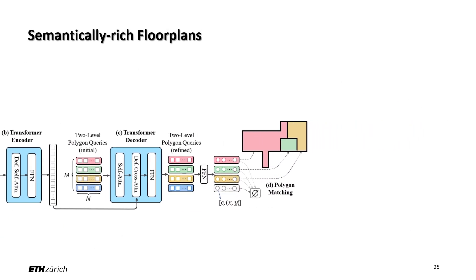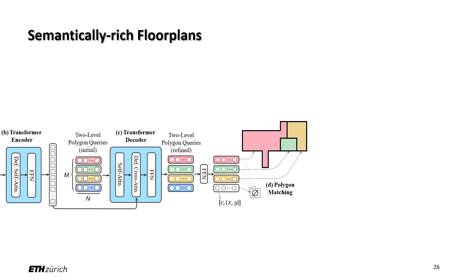Finally, our model can be easily extended to predict room types and architectural elements such as doors and windows. We model doors and windows as line elements and consider them as special polygons with fixed two vertices. In this way, we just need to increase the number of room-level queries M since more polygons need to be predicted.